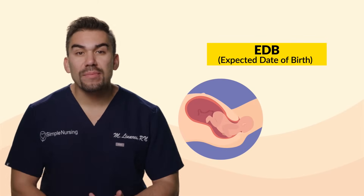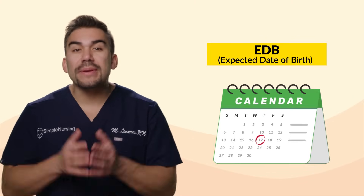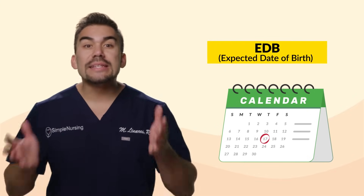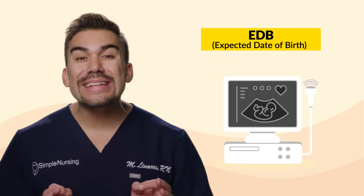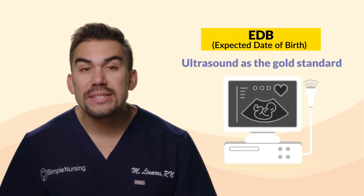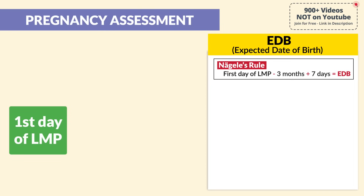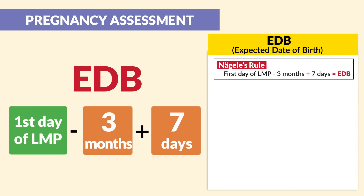Now we're going to talk about the EDB — expected date of birth — also referred to as the EDD, expected due date. Determining this is vitally important because planning and interventions during pregnancy are based on this information — for example, whether labor needs to be induced, and diagnosing preterm labor. Common methods include ultrasound as the gold standard, but the top tested method for exams is Nagel's rule. With Nagel's rule, you look at the first day of the last menstrual period based on the 28-day cycle, subtract three months, then add seven days — and that equals the EDB.